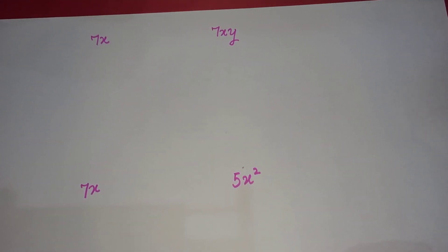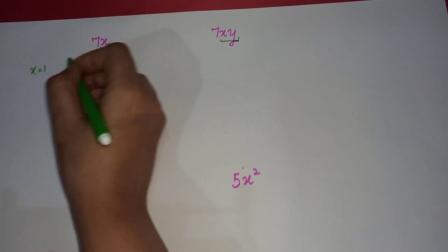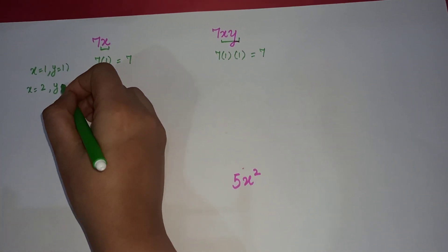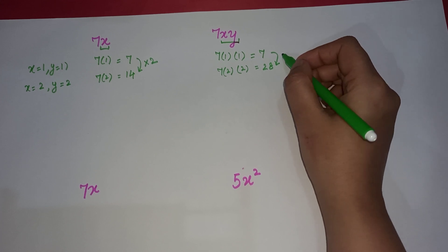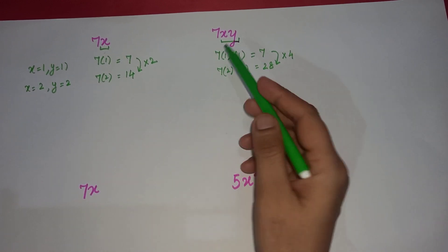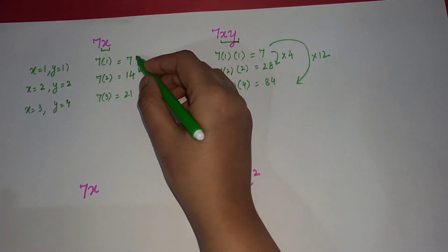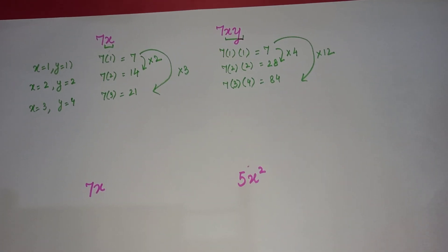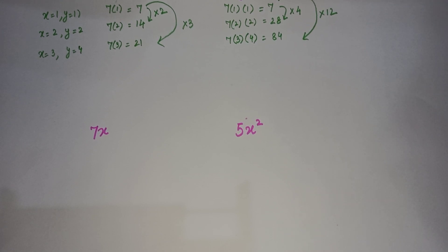Now I have two more terms: 7x and 7xy. What's your gut feeling — are these two like terms or not? If you look at the variable part, it is different. When we check, here it is becoming 2 times, but this expression is becoming 4 times, so they are not growing in the same fashion. It largely depends on the variable part attached to the terms. They are not growing in the same fashion because their variable parts are different, and that is making them grow in a different way.